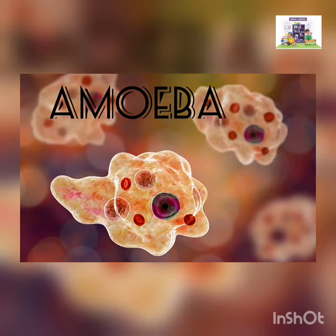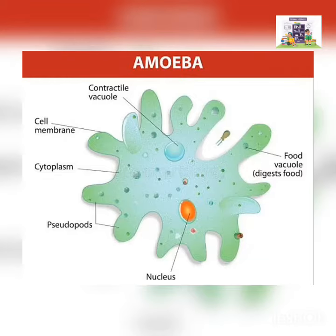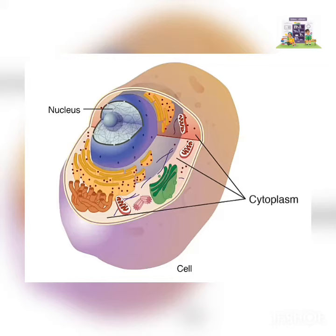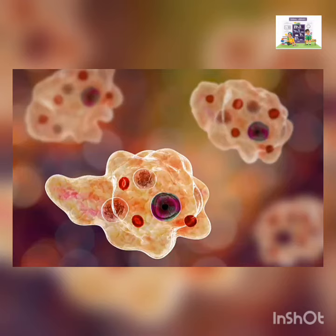Here is a sketch of the amoeba — please pause the video and look at the sketch. This is the cell membrane diagram; please go through that as well. This diagram also shows the cytoplasm. The cell is labeled with its key parts, so please pause and review the diagram carefully.